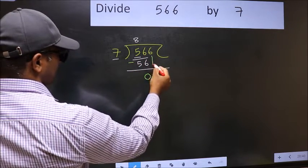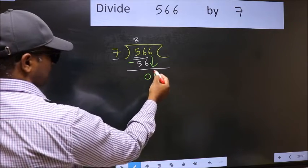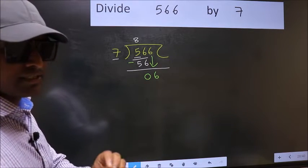After this, bring down the beside number. So 6 down. After this step, the mistake happens. And the mistake is this.